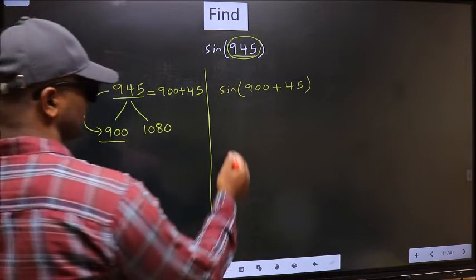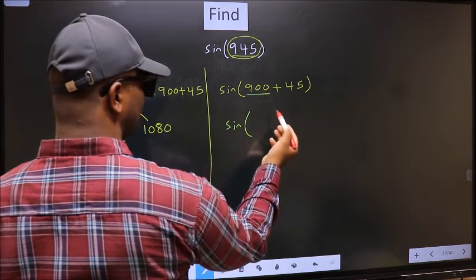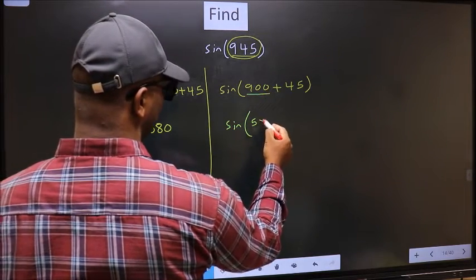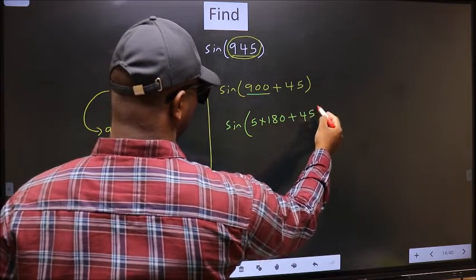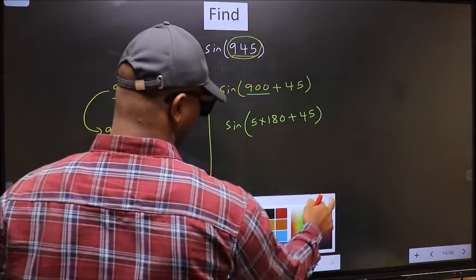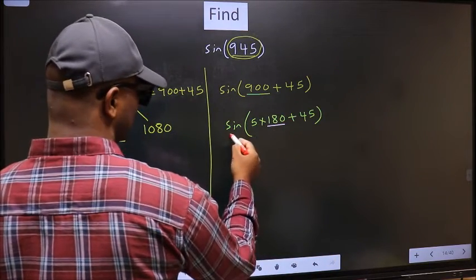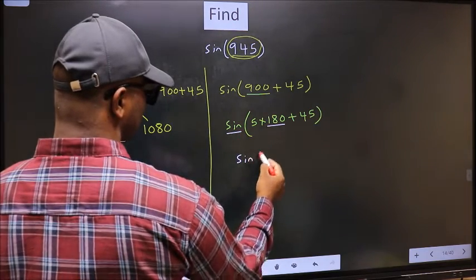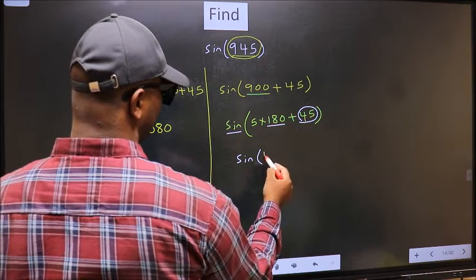Next, sin(900+45). In place of 900, now you should write 5×180+45, so sin(5×180+45). Here we have 180, so sin is not going to change. It will remain sin. And inside we get this angle 45.